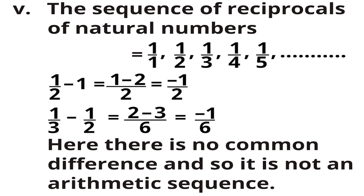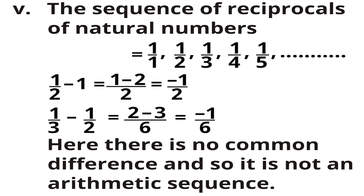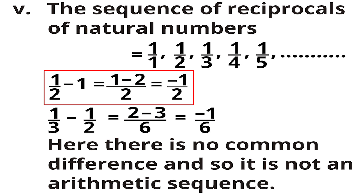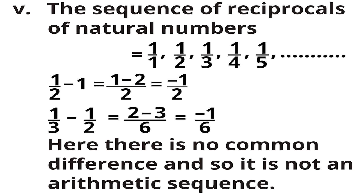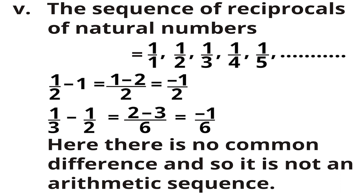The fifth sequence is reciprocals of natural numbers: 1, 1/2, 1/3, 1/4, 1/5. Checking: second term minus first term is 1/2 minus 1 — making denominators equal using LCM of 2, giving minus 1/2. Third term minus second term is 1/3 minus 1/2 — LCM is 6, giving minus 1/6. The differences are minus 1/2 and minus 1/6, which are not equal, so this is not an arithmetic sequence.